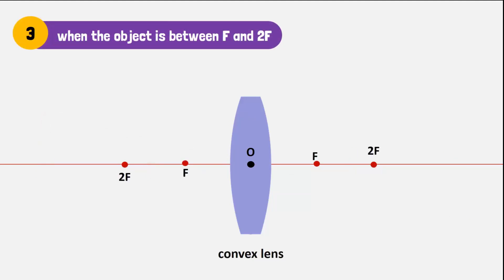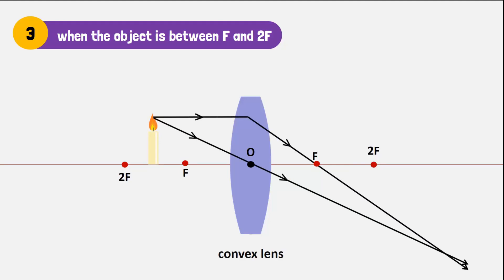However, if the candle is placed between F and 2F of the convex lens, the rays of light will converge beyond 2F on the other side of the lens. The image formed will be real, inverted, and much larger in size compared to the object.